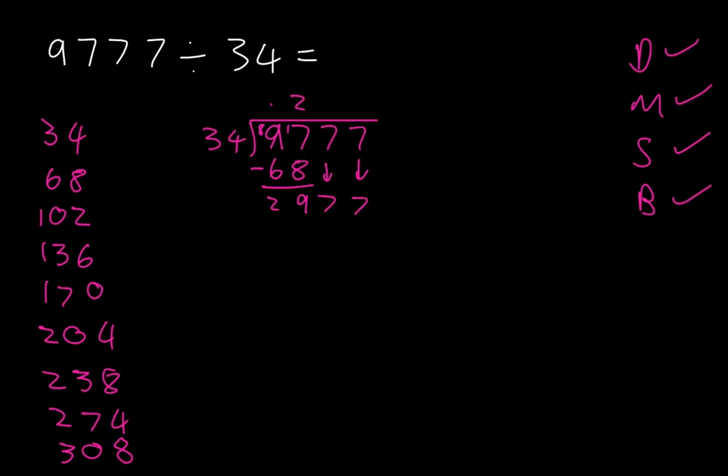Now we're going to repeat the example over. 29 divided by 34 doesn't work. Well, 297—obviously 34 divides into 297. So now we look at our multiples and see where 297 falls. 297 falls right there.